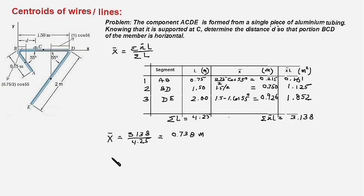X bar is equal to D, because we said that the centroid will lie on a vertical line passing through C. Therefore, X bar would be the distance BC and will be equal to D. So X bar is equal to D and is equal to 0.738 meters, and that is the answer.